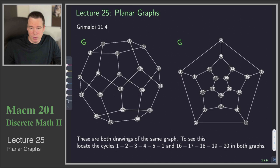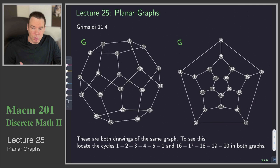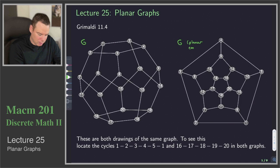What's the difference then? The difference is in how we drew them. The one on the right has a particularly nice drawing in that the only places that edges intersect is at their vertices, whereas the one on the left we can see edges crossing each other but not at a vertex. So the drawing on the right is what we call a planar embedding of the graph G. And so if the question is: can we draw this graph G on the plane such that no edges intersect except at the vertices that they are incident with?